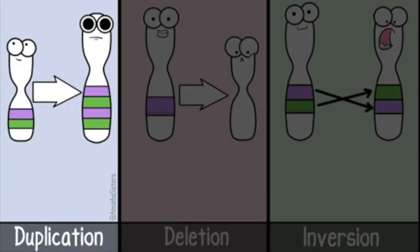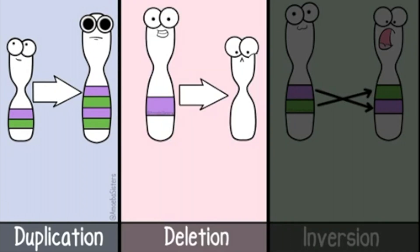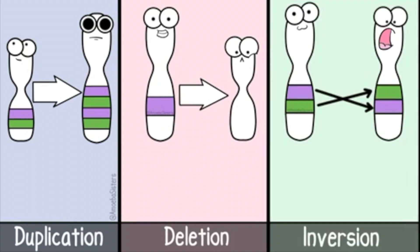During this process, sometimes the fetus can end up with duplicated chromosomes that incorrectly repeat the same genes, deletion of genes that are vital for survival, or chromosomes with genes switched in the wrong order. Any of these mutations could result in a miscarriage.